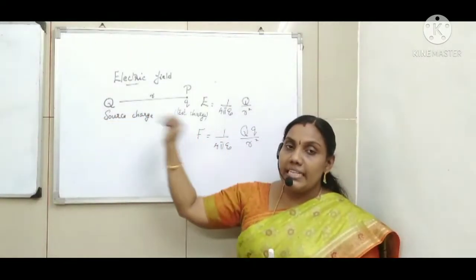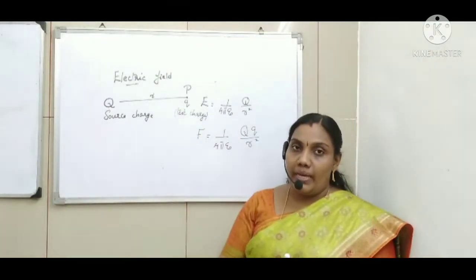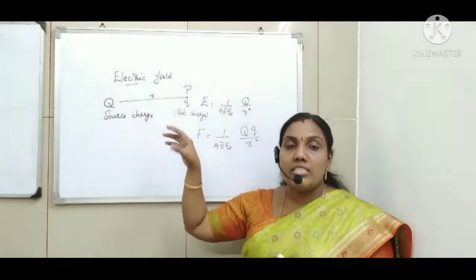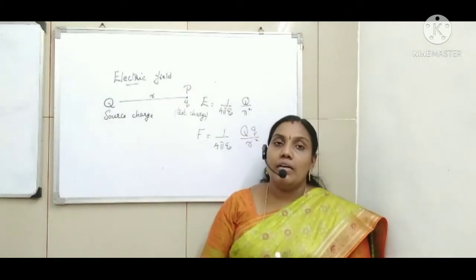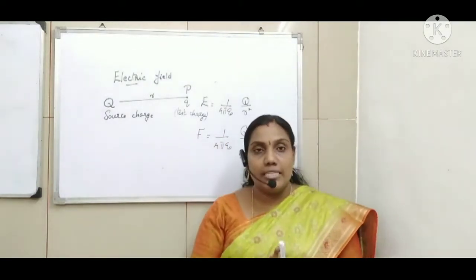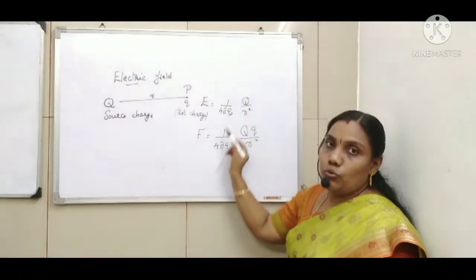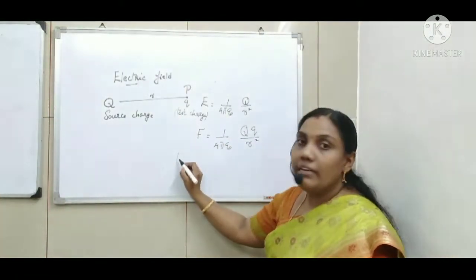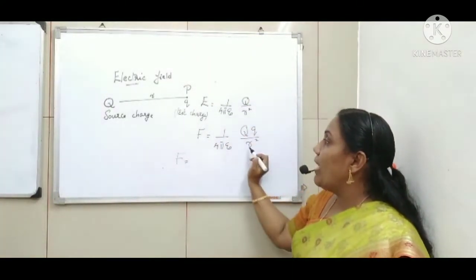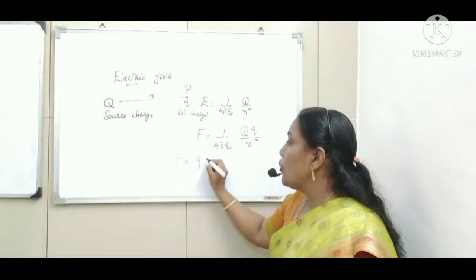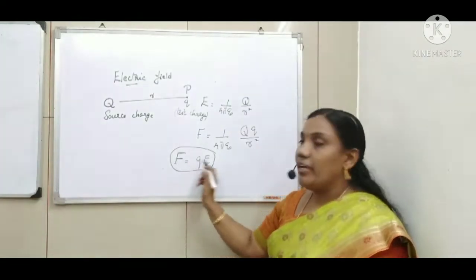Around the source charge there is an electric field, and the electric field at any point at distance R is given by 1/(4πε₀) × Q/R². If at that point another test charge is placed, the force between them is 1/(4πε₀) × Qq/R². So force exists only if a test charge is placed, and electric field always exists around any source charge. Comparing the two expressions, F = qE, so the relation between force and electric field is F = qE.